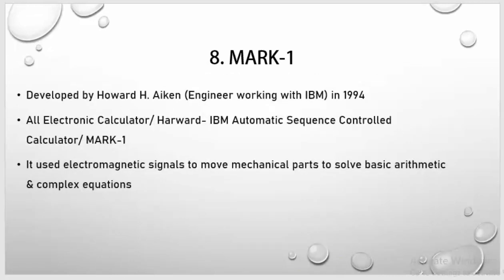Next one is Mark 1. As you can see in this picture, Mark 1 was developed by Howard H. Aiken. He was an engineer working with IBM and he developed Mark 1 in 1944. It has three names: All Electronic Calculator, Harvard IBM Automatic Sequence Control Calculator, and the short one is Mark 1. Basically, it used electromagnetic signals to move mechanical parts, and in this way it was able to solve basic arithmetic and complex equations.